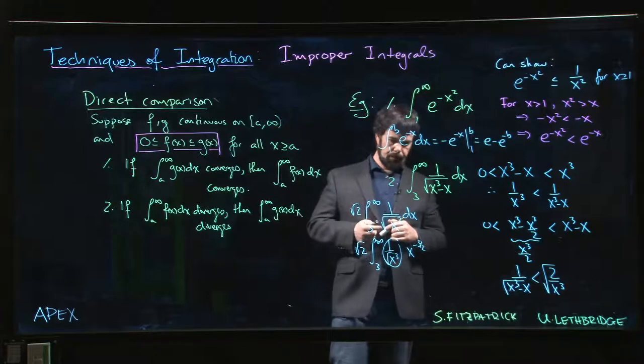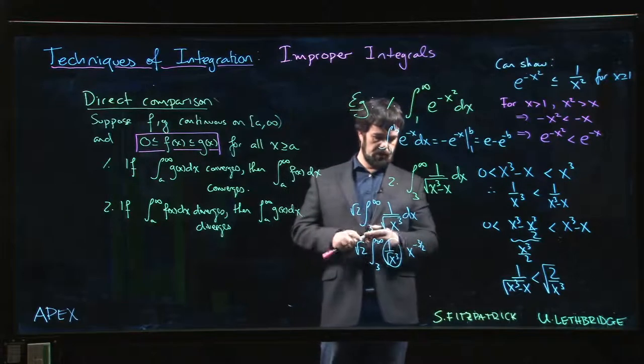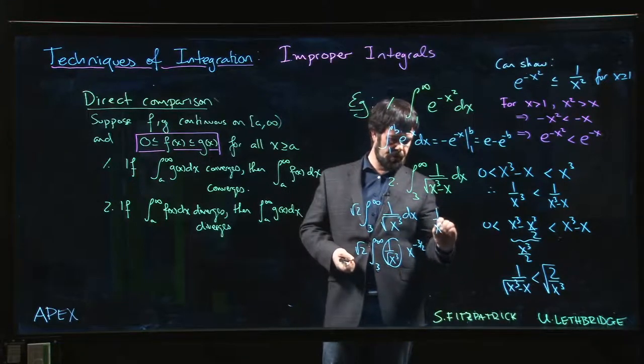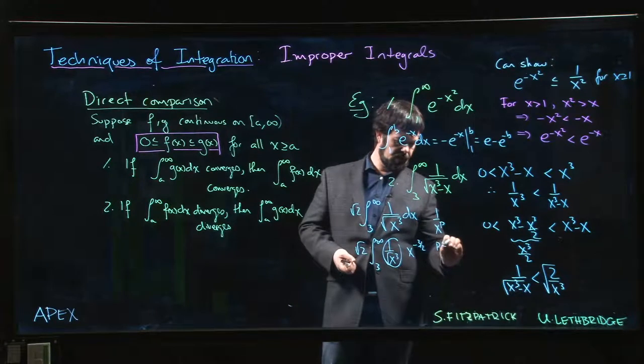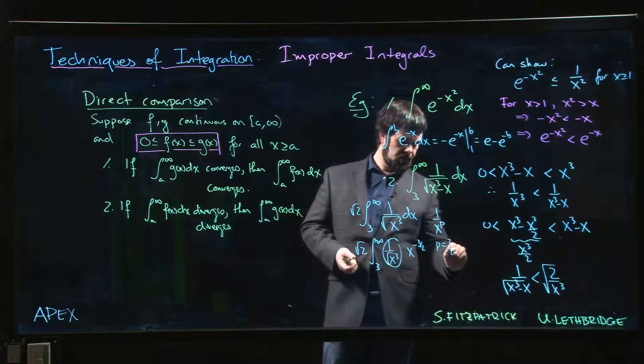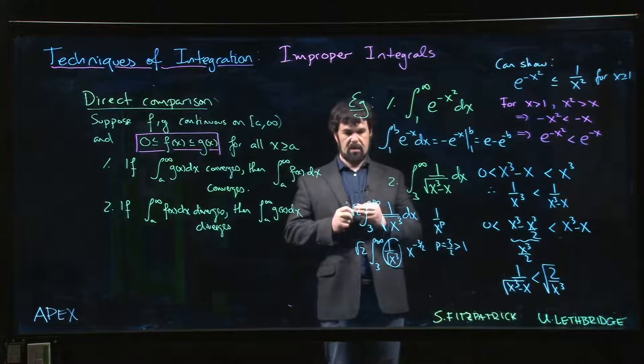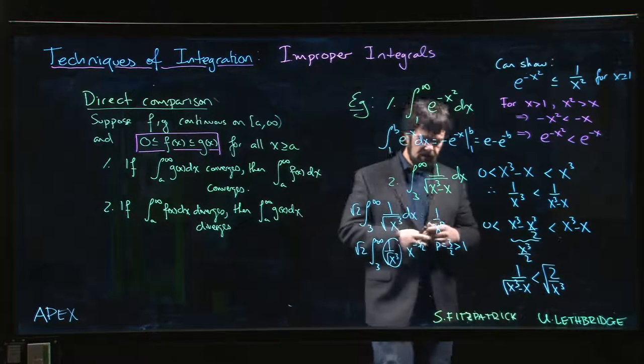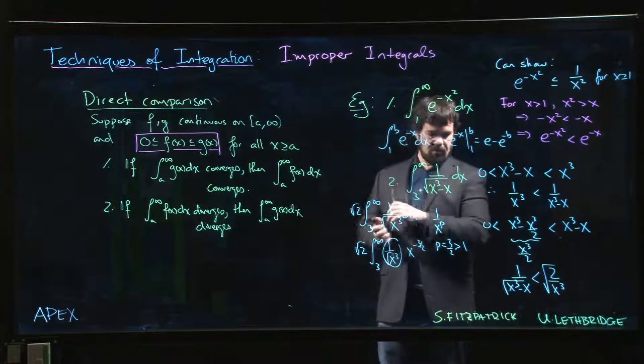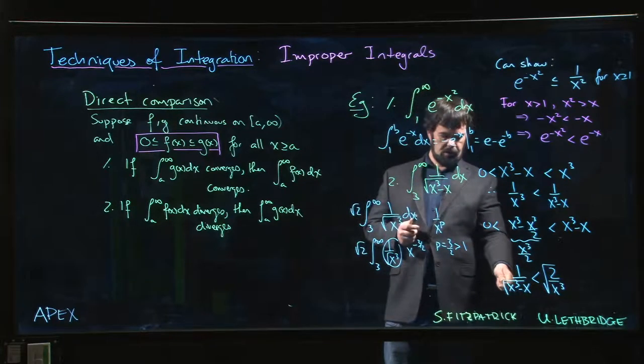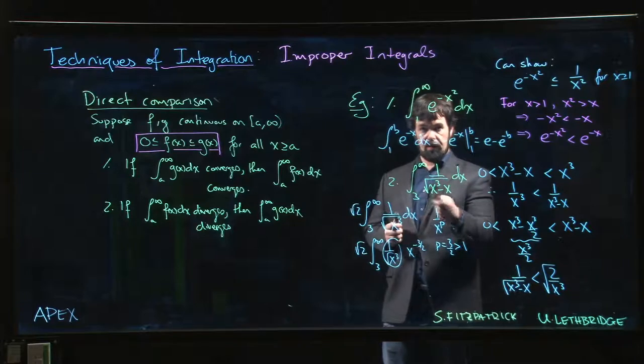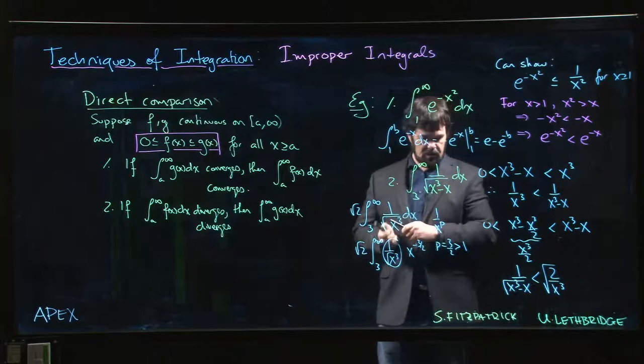So this is still, it's still a p series. So this is of the form 1 over x to the p, where p is 3 over 2, which is bigger than 1. So it converges. So it's convergent p series. And since we know that this is a convergent p series, and these terms are smaller than this convergent one, we know that this integral converges as well.